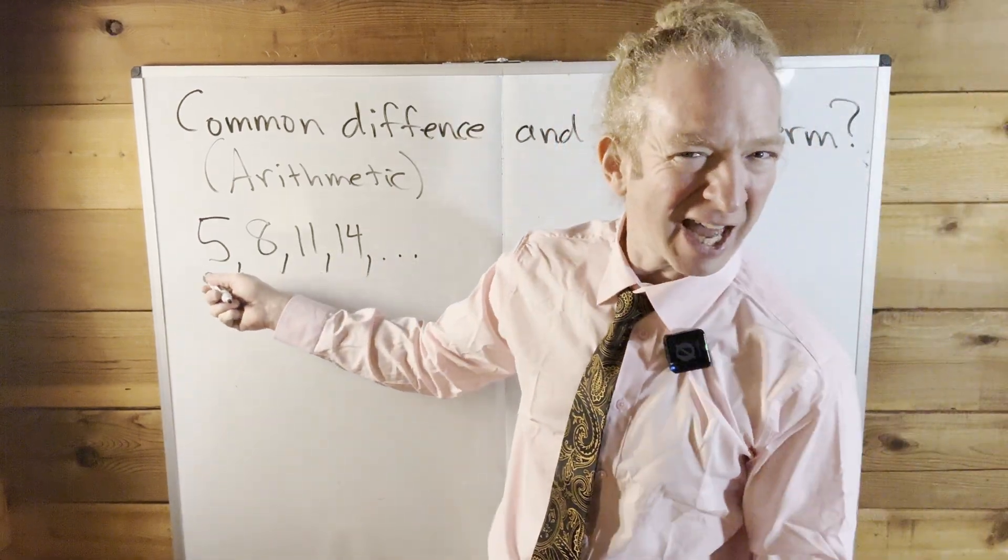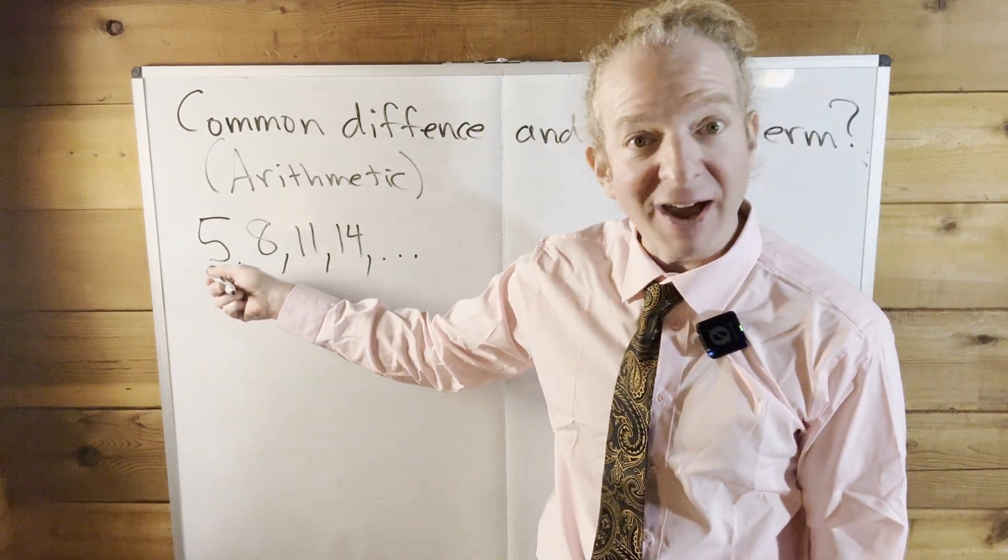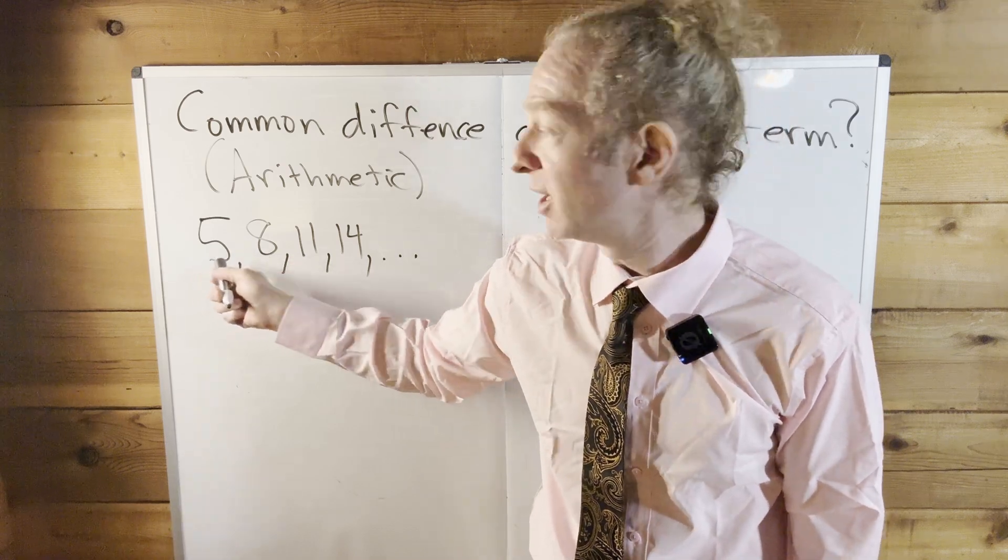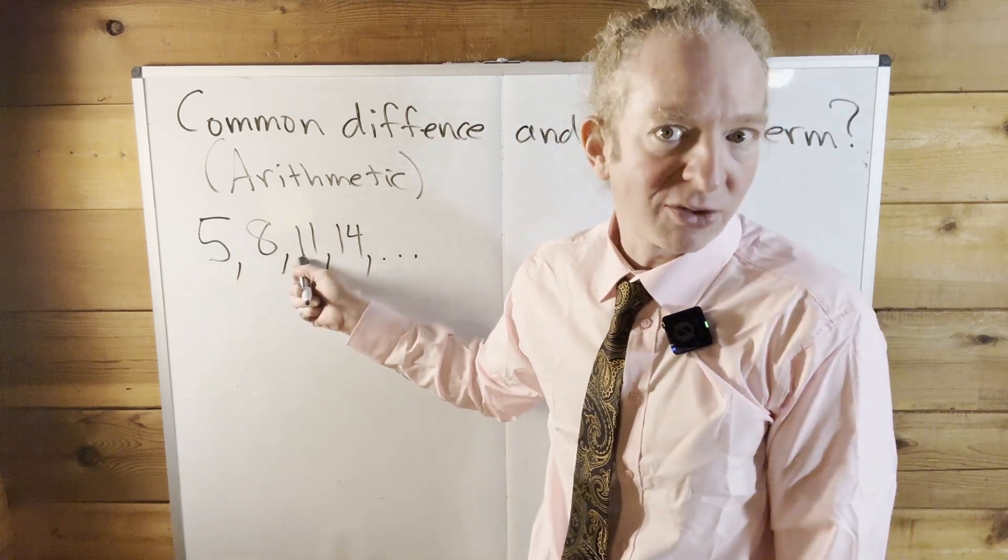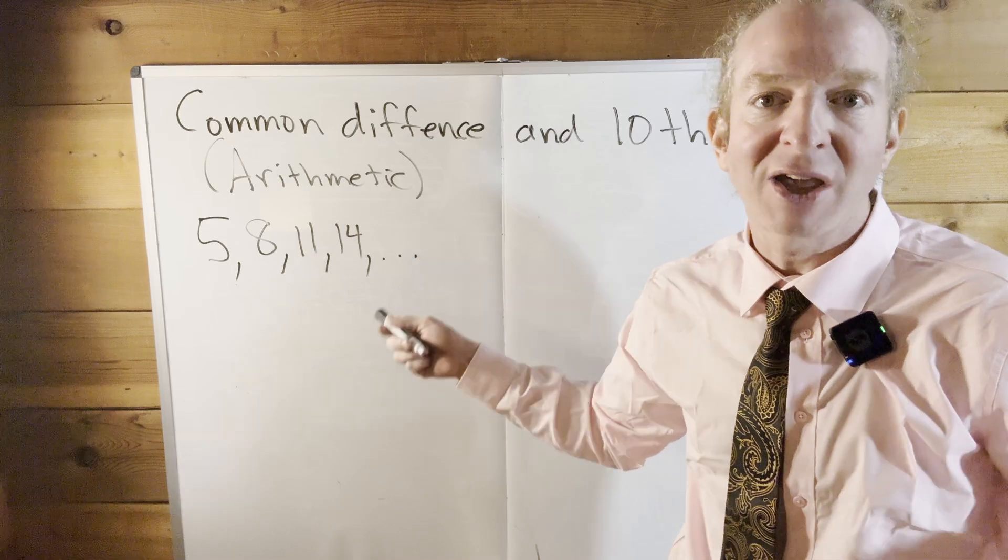You can kind of just look at it and tell, right? To get to 8 from 5, you add 3. To get from 8 to 11, you add 3. To get from 11 to 14, you add 3.